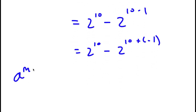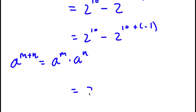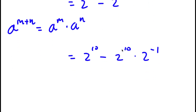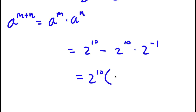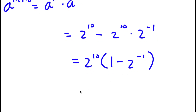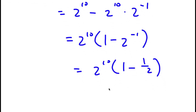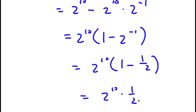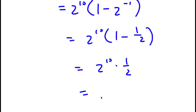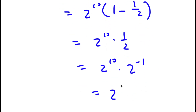Using the rule a to the power of m plus n equals a to the power of m times a to the power of n, 2 to the power of 10 plus negative 1 becomes 2 to the power of 10 minus 2 to the power of 10 times 2 to the power of negative 1. Factoring out 2 to the power of 10 gives 2 to the power of 10 times 1 minus 2 to the power of negative 1. Since 2 to the power of negative 1 is 1 over 2, I have 2 to the power of 10 times 1 half, and 1 half is 2 to the power of negative 1, so the result is 2 to the power of 10 times 2 to the power of negative 1, which equals 2 to the power of 9.